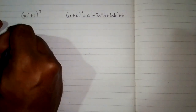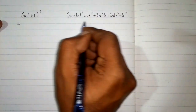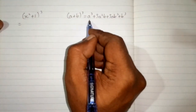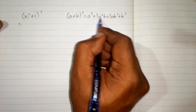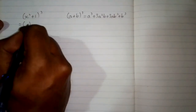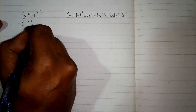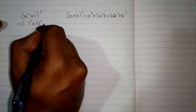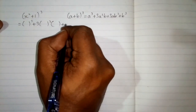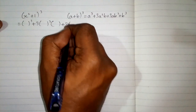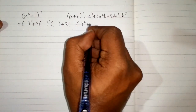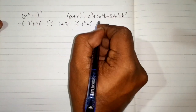First we will write the structure of the formula, putting brackets in place of a and b. So this is: a cube plus 3 a square b plus 3 a b square plus b cube.